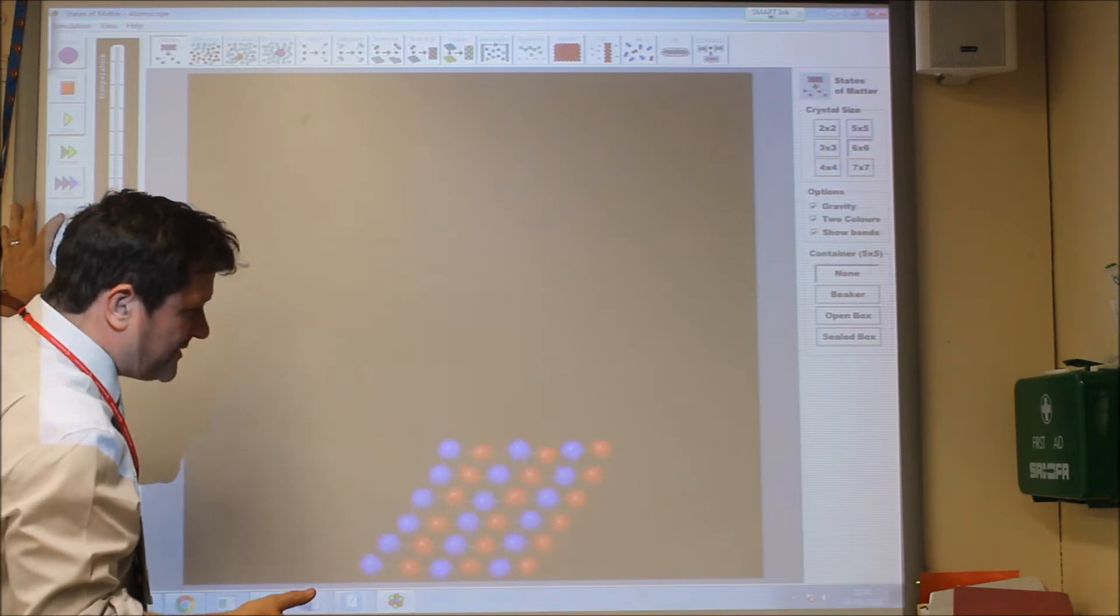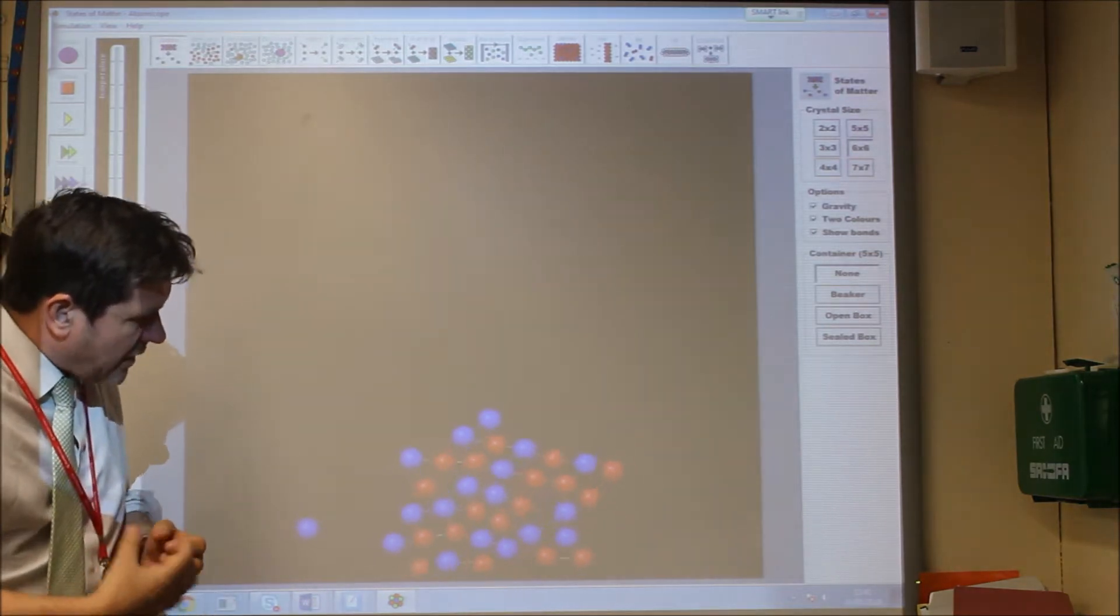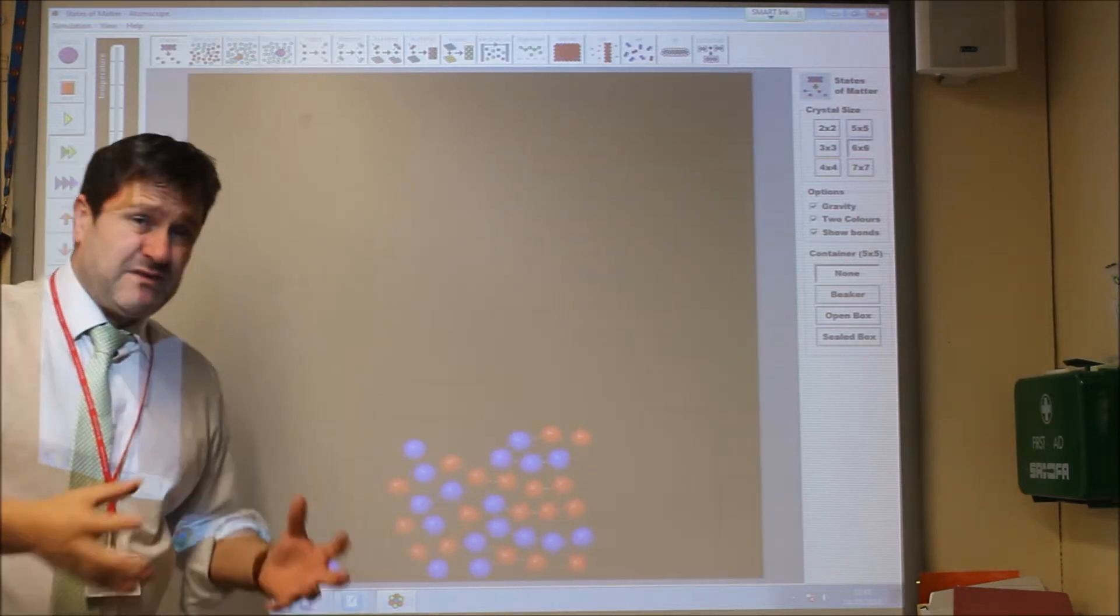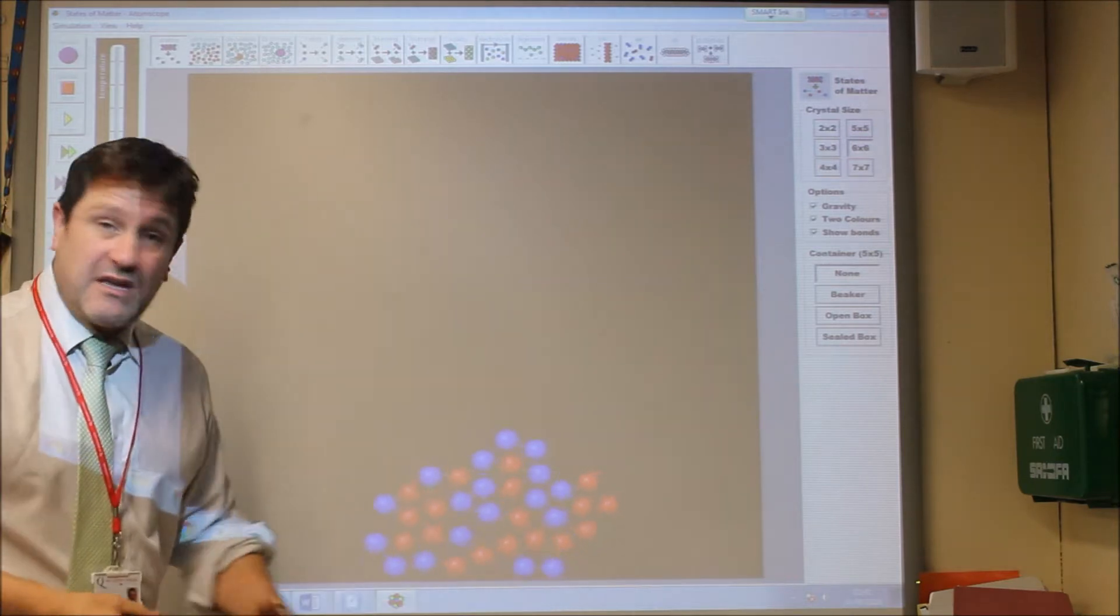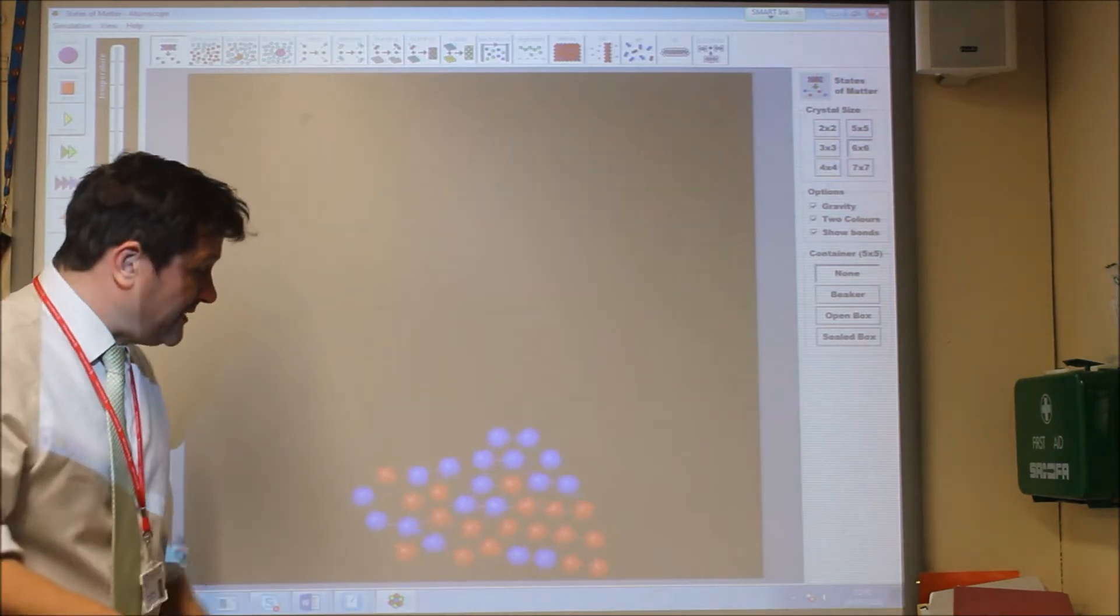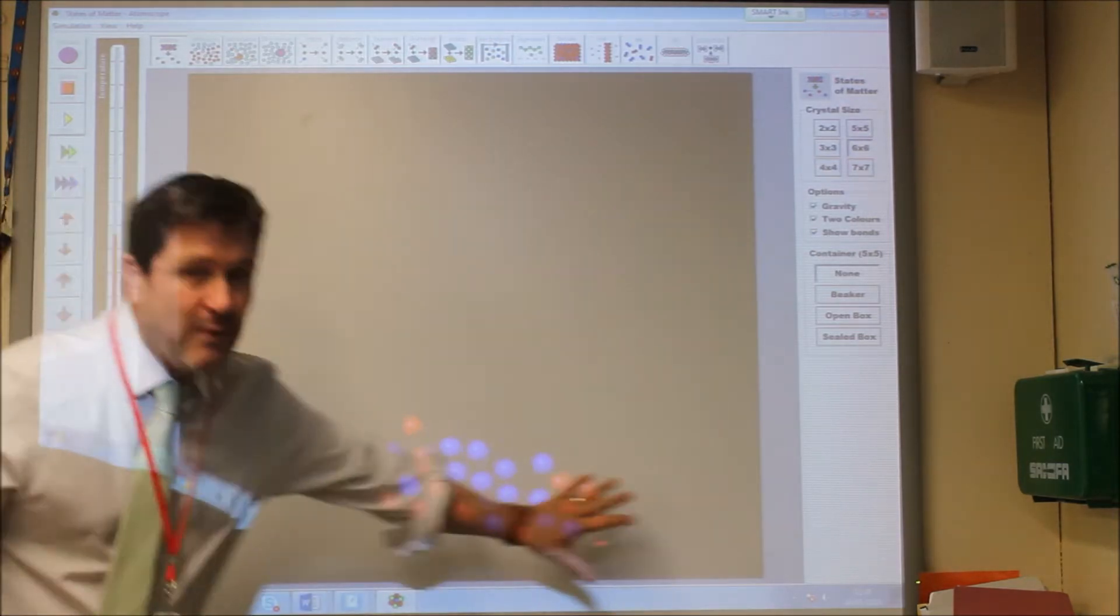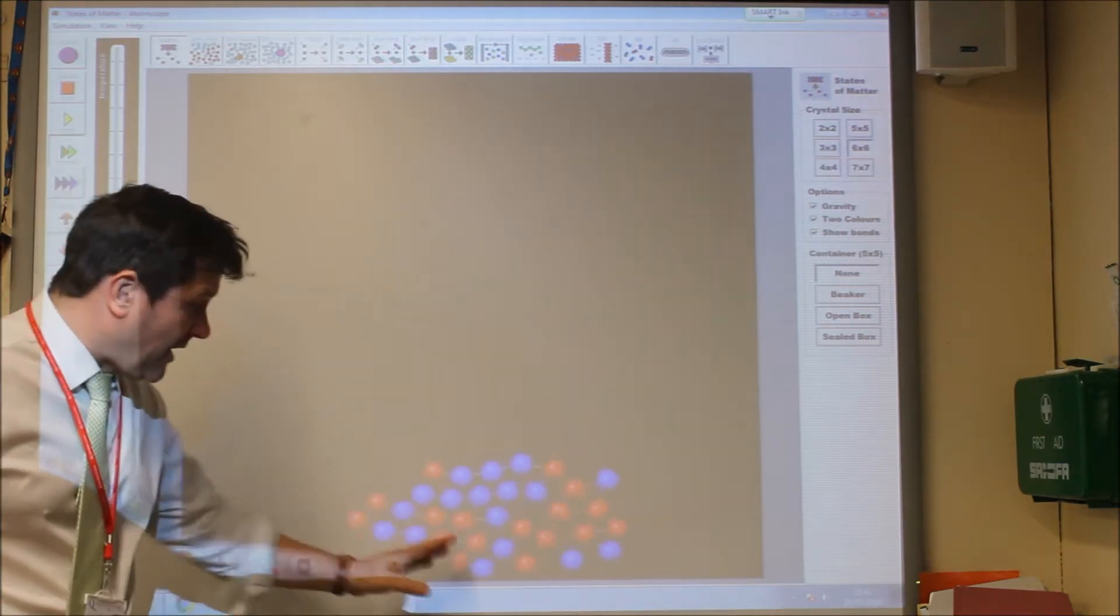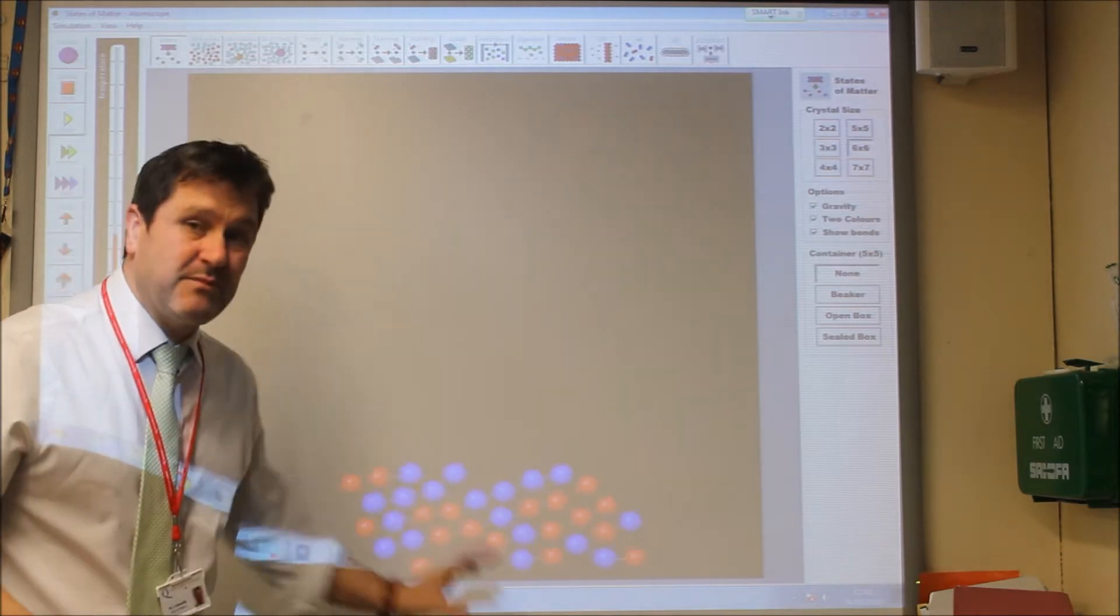However, if we increase the temperature, the particles start to move over one another and now they will occupy the shape of the bottom of the container. This is a liquid. The particles are still touching, so therefore they can't be compressed, but now they can flow. This would be the particles in a liquid. Ideally, there'd be more to show that it occupies the bottom of the container, but the particles are still very close together and therefore still cannot be compressed.